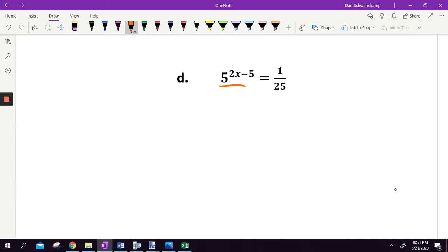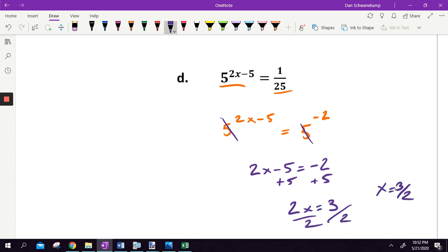Try it again. 5 to the 2x minus 5 and 1 over 25. What base can I rewrite both sides to be? Well, I see that base of 5, probably going to stick with it. What does my power need to be to get me 1 over 25? Well, since it's a fraction, I know it's going to be negative. And then 5, what gets me 25? 5 squared. Once we've rewritten, cancel the bases. Add 5, add 5. 2x is 3. Divide by 2, divide by 2. x equals 3 halves. Done.